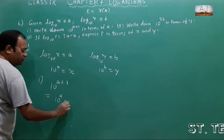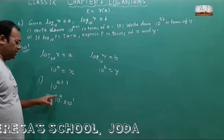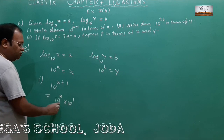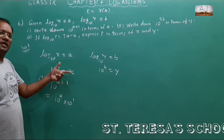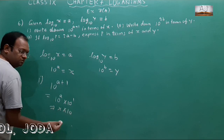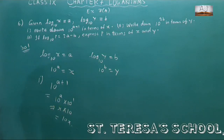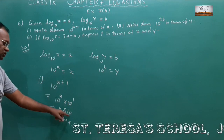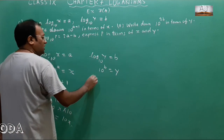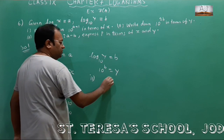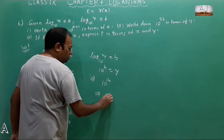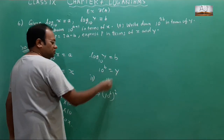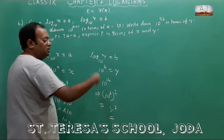So 10 to the power a plus 1 means 10 to the power a multiplied by 10 to the power 1. The value of 10 to the power a is x, and 10 to the power 1 is 10, so 10 to the power a plus 1 equals 10x. For the second value, find 10 to the power 2b. We write this as 10 to the power b, squared. The value of 10 to the power b is y, so this becomes y squared.